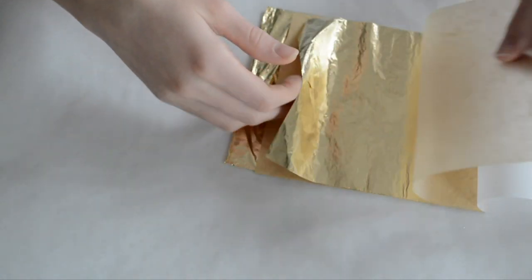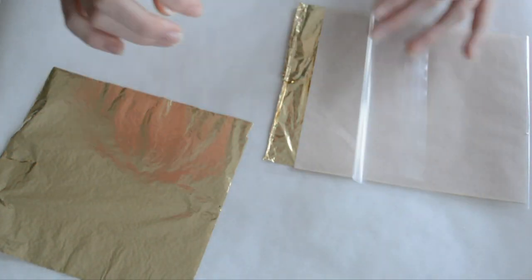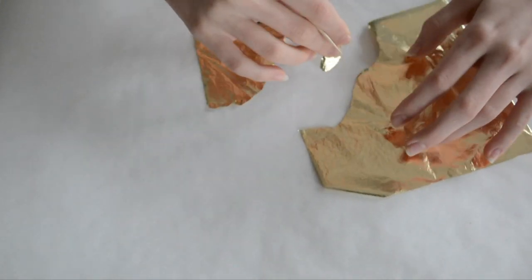So all I did here is I carefully took one of the sheets that I got in my package, and then you're gonna want to rip off a little corner because you're not going to use the whole thing—that would be a little bit too much.